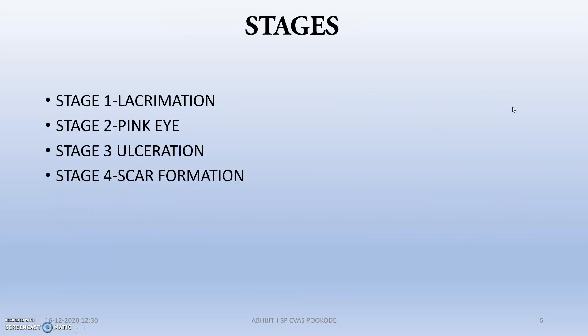The stages are: Stage 1 involves lacrimation, with severe lacrimal duct involvement. Stage 2 produces the pink eye appearance, where corneal edema is the main reason. Stage 3 is ulceration, with many ulcerative problems near the eye region. Stage 4 is scar formation.